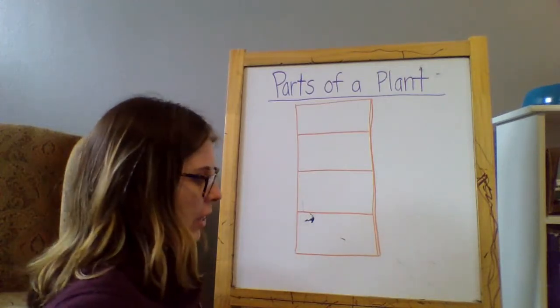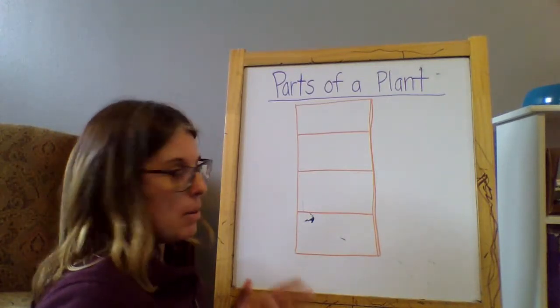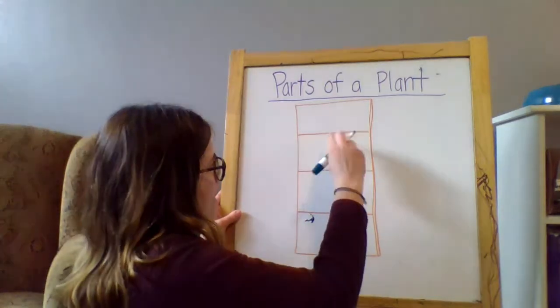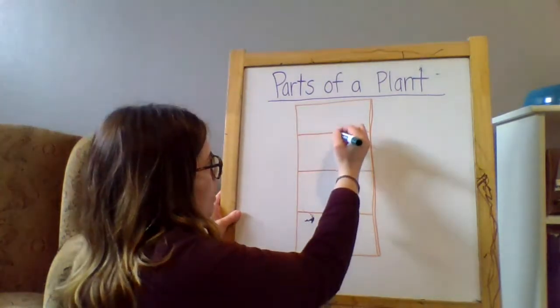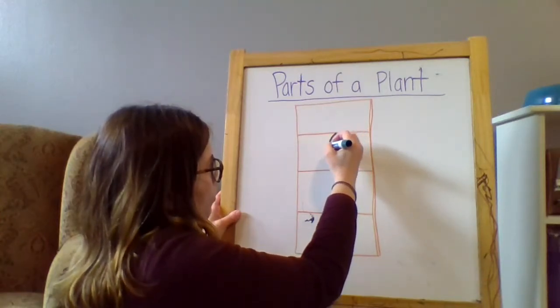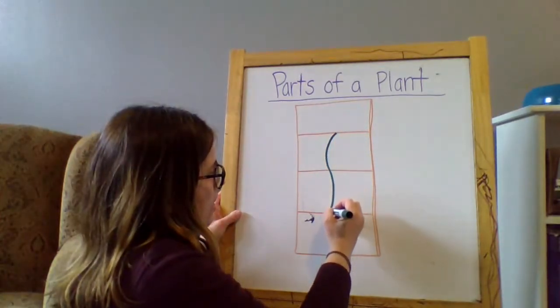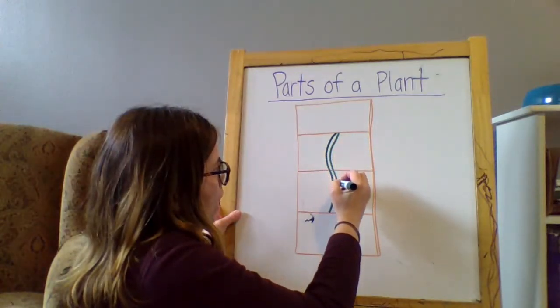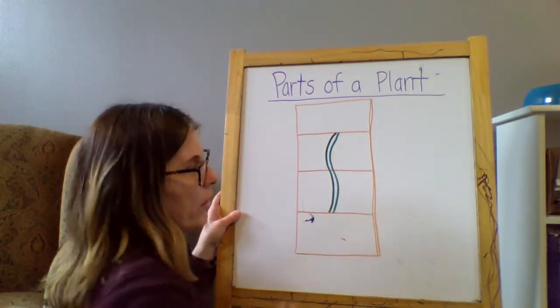The first thing I started with was drawing my stem. Because that helped me figure out where my other parts would go. So I figured out that my stem should run through the two middle pieces. And I kind of drew it like a little bit curvy. And I drew two lines so that I could go back and color it in later.